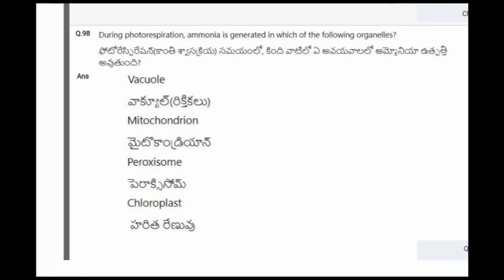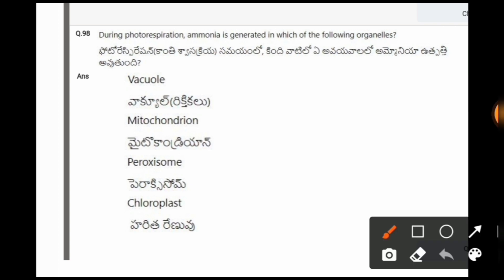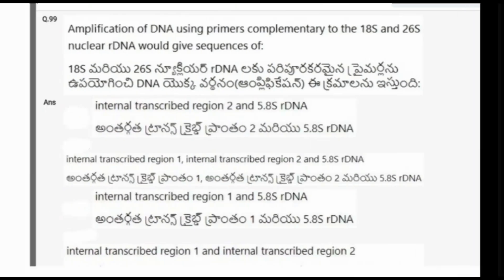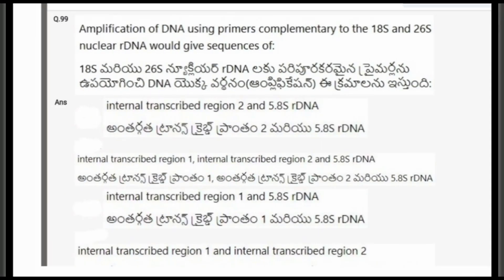Next question: During photorespiration, ammonia is generated in which of the following organelles? The options are vacuole, mitochondria, peroxisome, chloroplast. The correct option is the second one, that is mitochondria.